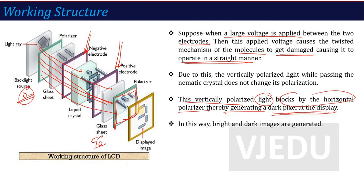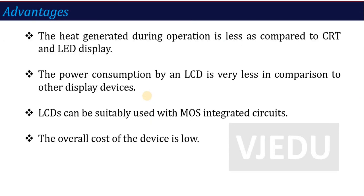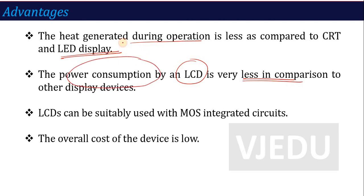This is the working structure — how we get a bright image or a dark image on the glass cover screen. Regarding advantages of LCD: first, the heat generated during operation is less as compared to CRT and LED. Power consumption is very low as compared to other display devices such as LED and CRT. The overall cost is low, and the LCD is suitable for use with MOS integrated circuits.